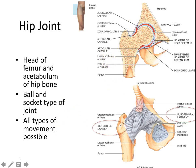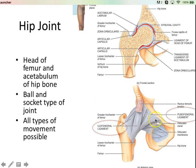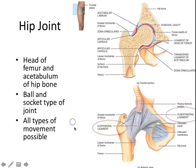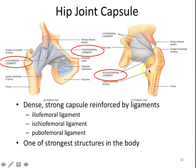All types of movements are possible at the hip. I've highlighted the ligaments you need to know for lab. Coming from the pubic bone to the femur, you have the pubofemoral ligament. Coming from the ilium down to the femur, you have the iliofemoral ligament. And here in the back, going from the ischium, you have the ischiofemoral ligament.